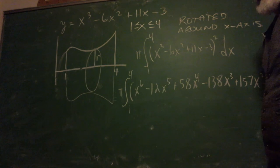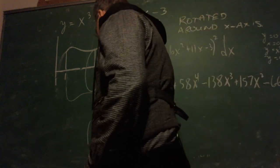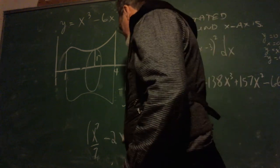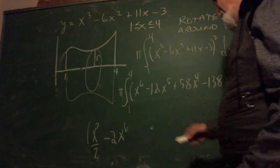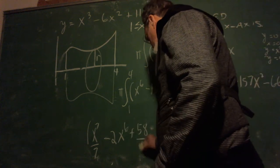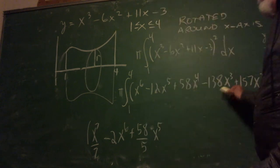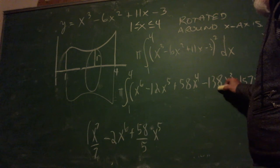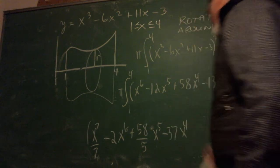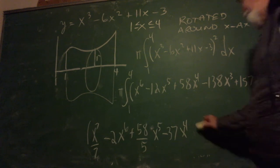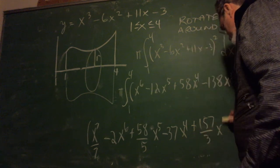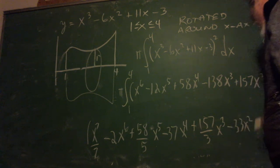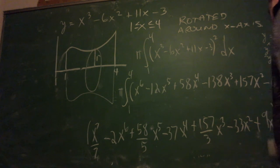From 1 to 4, pi. Now just anti-derivative all the way across. I end up with x to the seventh over 7 minus 2x to the sixth, 58 over 5 x to the fifth, minus 37x to the fourth, 157 over 3 x cubed minus 33x squared plus 9x, evaluated from 1 to 4.